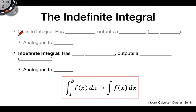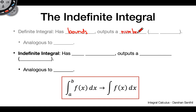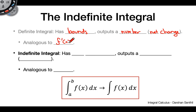What we've been talking about so far is the definite integral. One of its defining properties is that it has bounds, and it outputs a number. We call this net change, also displacement. This is analogous to, when we look at differential calculus, finding f prime of c — we plug in some number into our derivative and get out a slope.